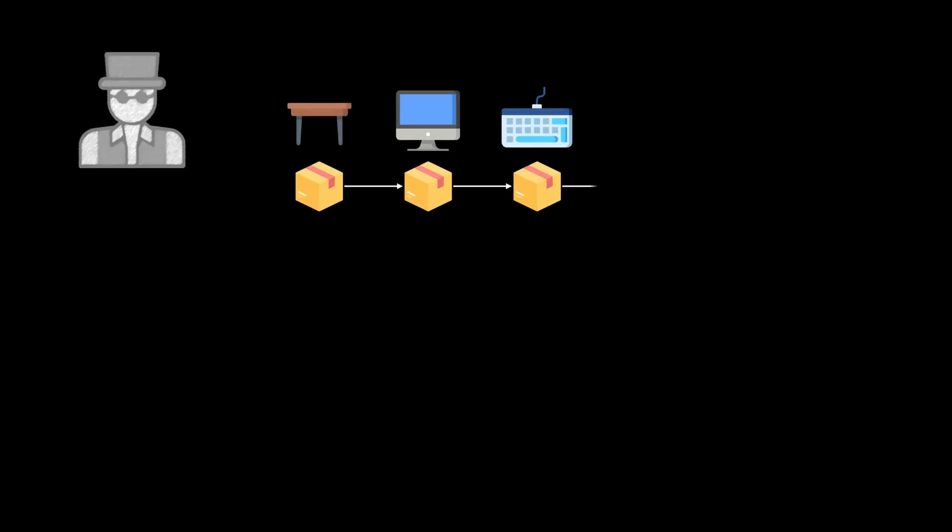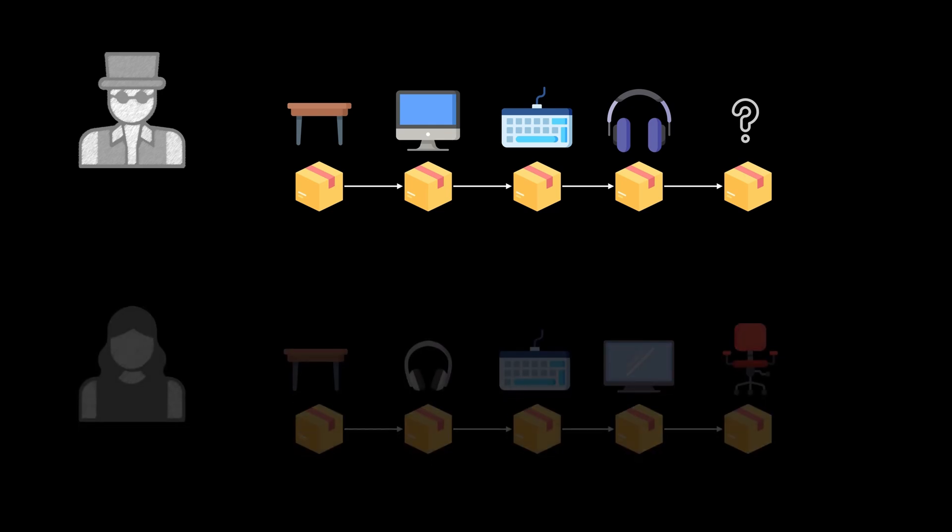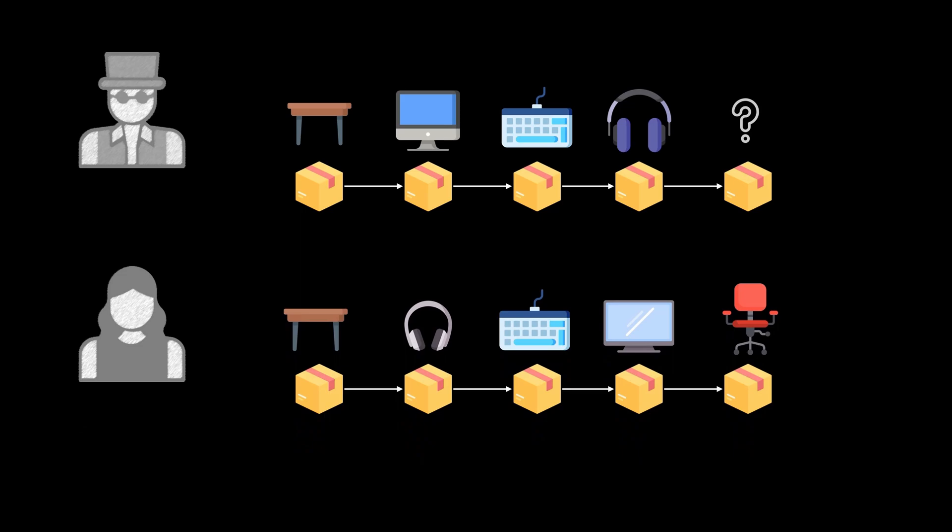There is one more type of recommendation systems I want to mention here, and those are sequential recommenders. A typical scenario is the following. A user buys a sequence of items, first a table, then a monitor, then a keyboard, and finally some headphones. Based on this purchase history, what might be the next item. It seems like he's building a home office setup and therefore an office chair is probably a good recommendation. This can also be based on the purchase history of other users that might have already bought this item.